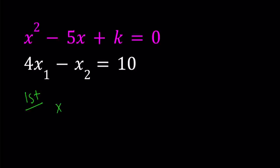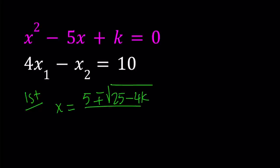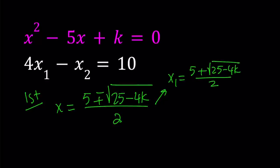If you use the quadratic formula to solve this equation, you get the following: x equals negative b plus or minus the square root of b squared, which is 25, minus 4ac, which is 4k, and then divide it by 2a. This gives us two solutions. Suppose x sub 1 is equal to 5 plus the square root of 25 minus 4k, divided by 2, and x sub 2 is 5 minus the square root of 25 minus 4k over 2.